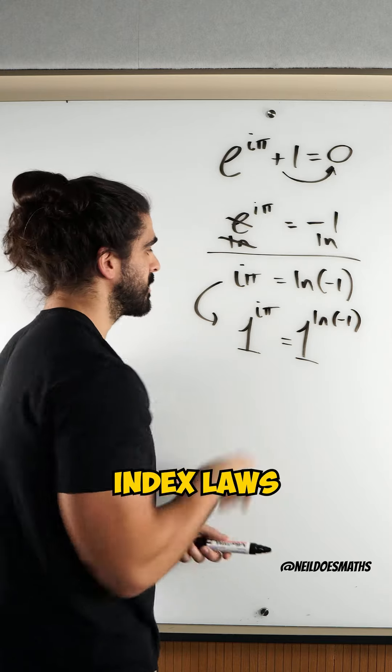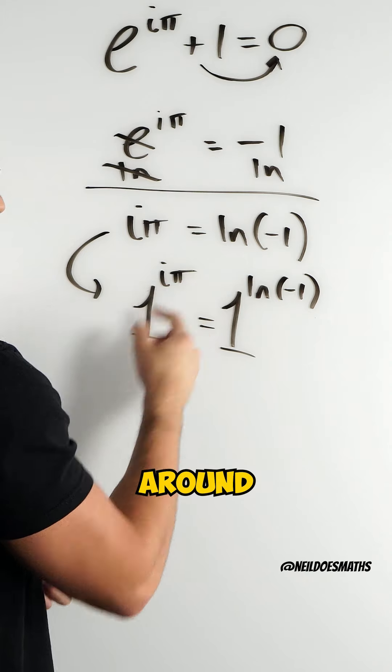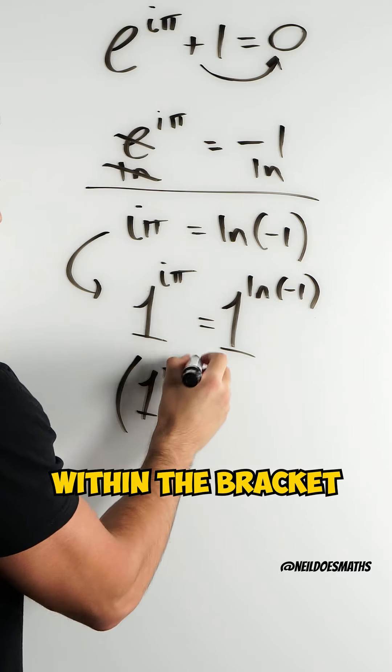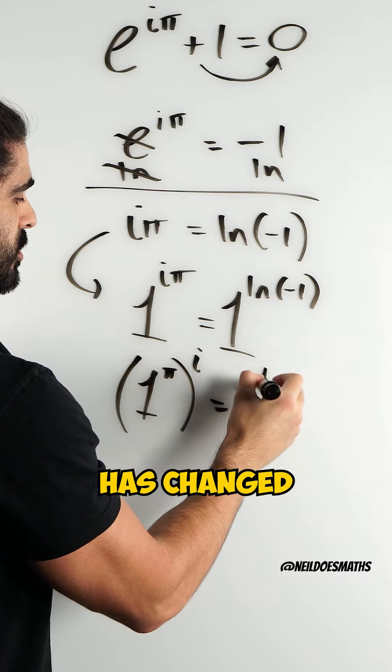Then using our index laws, I'm just going to rewrite these the other way around and write 1 to the power of pi within the bracket. Nothing else has changed.